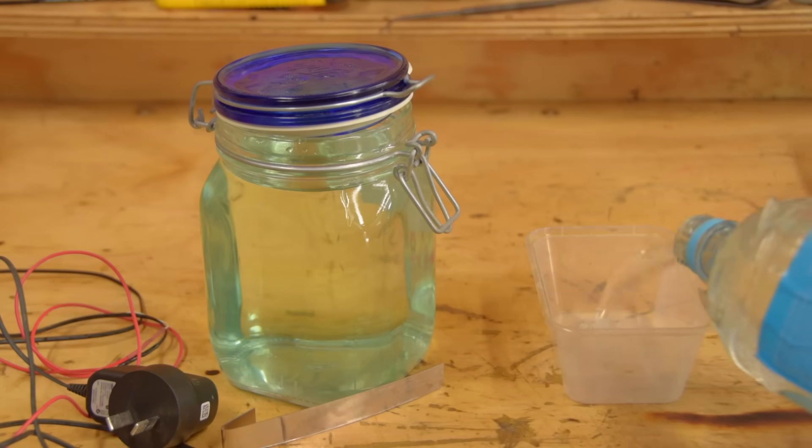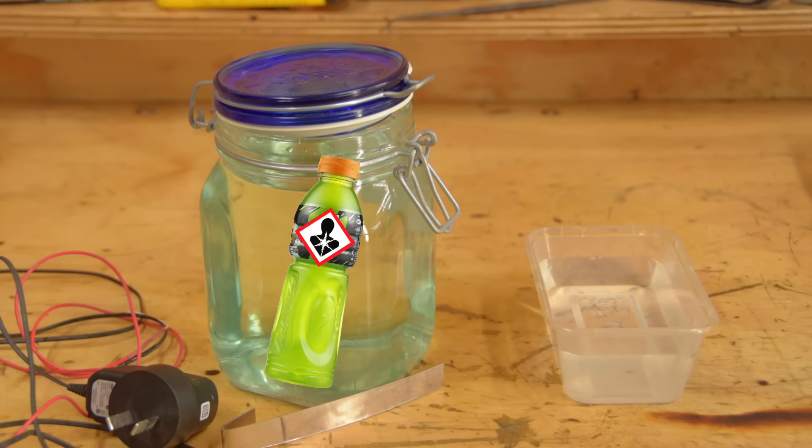This is what your nickel electrolyte should look like after an hour or two of brewing. It should be a definite green, like delicious watery Gatorade. It will get more concentrated as you use it, so don't worry too much about how green it looks to start with.